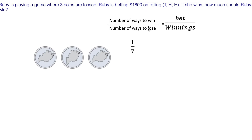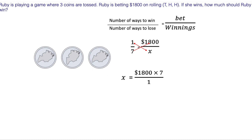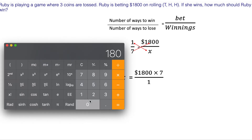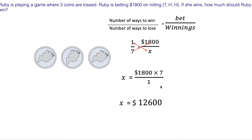We're betting $1,800, so the proportion is 1/7 = 1800/X, where X is how much she should win. Cross-multiplying — switching the one and the X — and multiplying by seven: seven times 1,800 gives us $12,600.